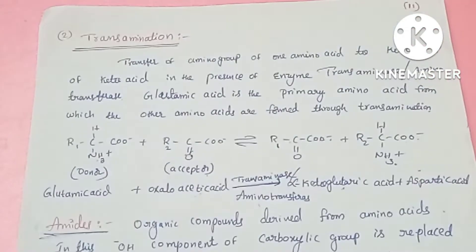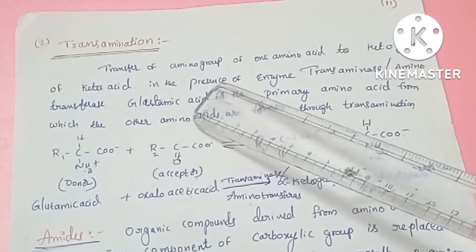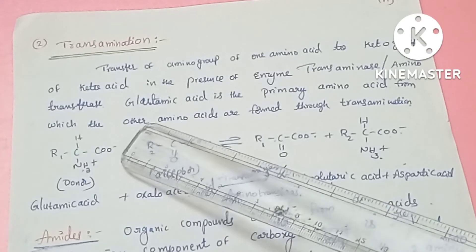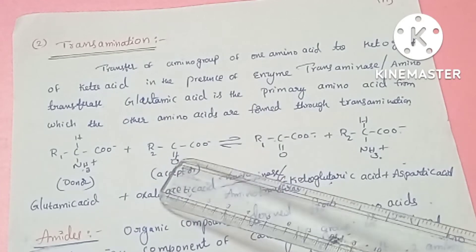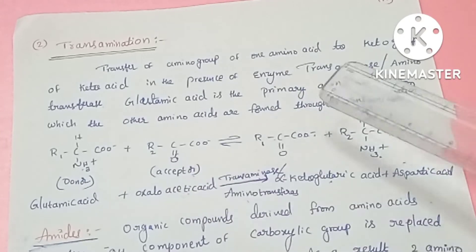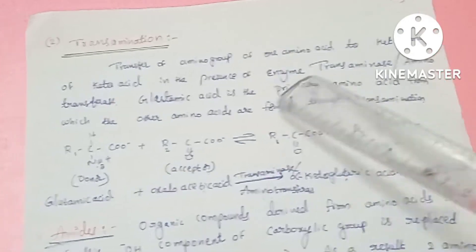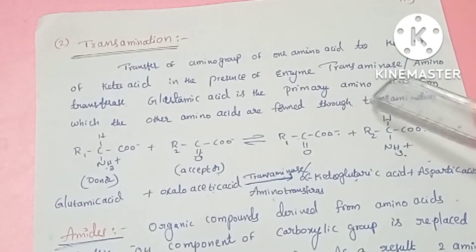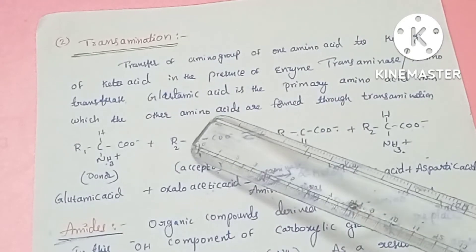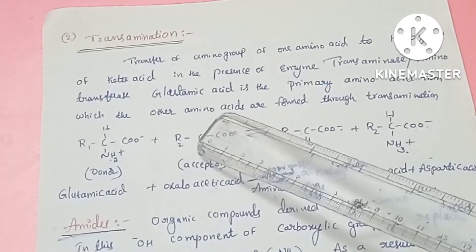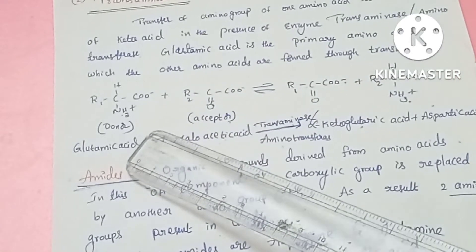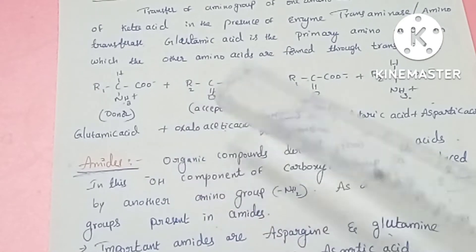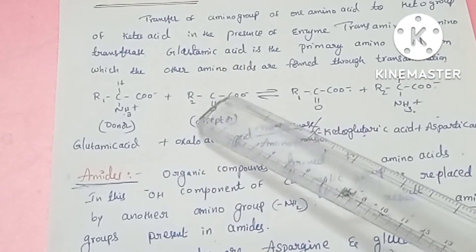The second step is transamination. Transamination means the transfer of an amino group from one amino acid to a keto acid. The primary amino acid formed is glutamic acid. By the process of transamination, other amino acids are also formed.